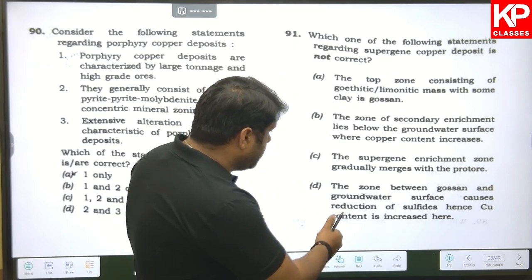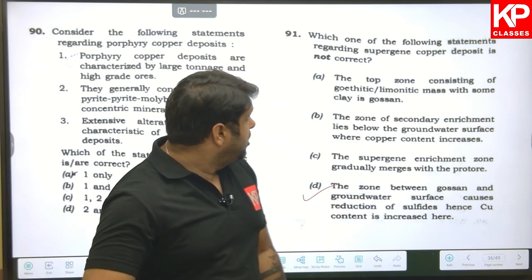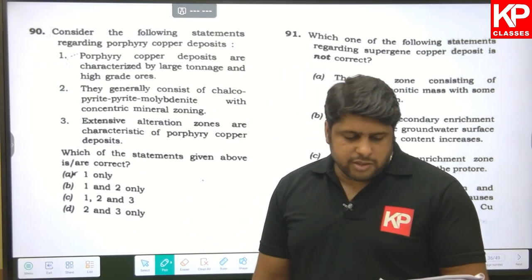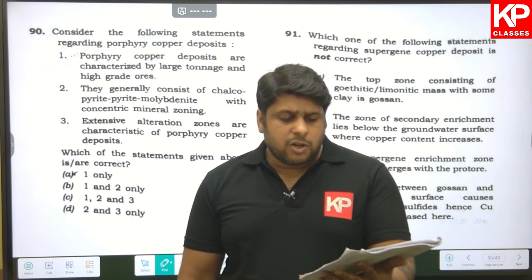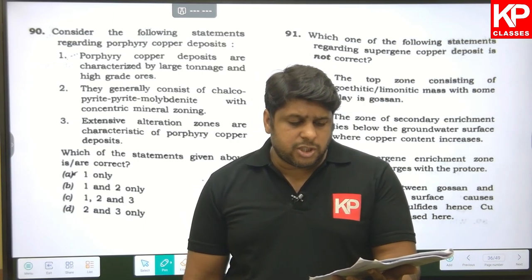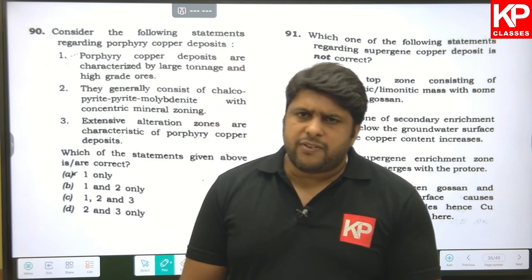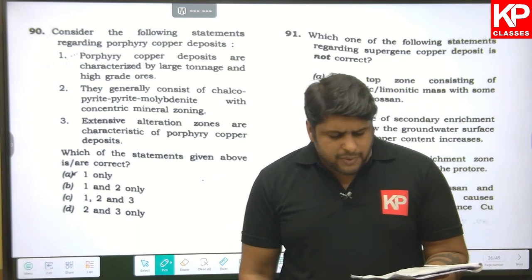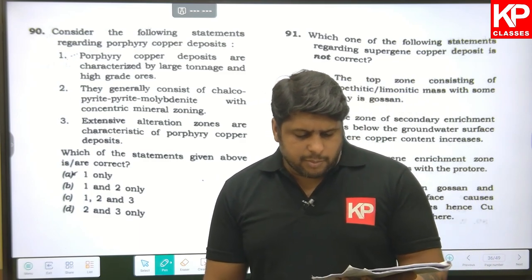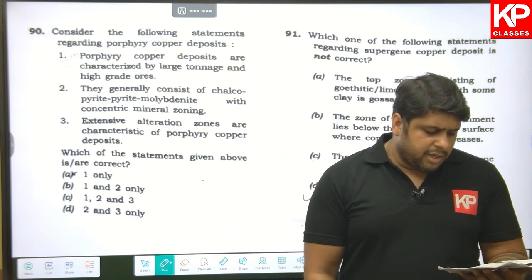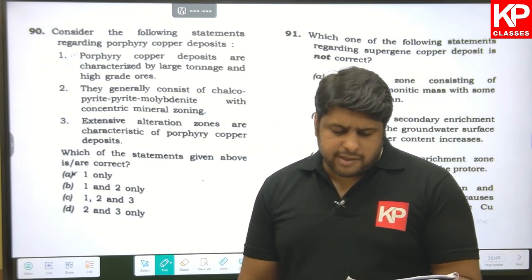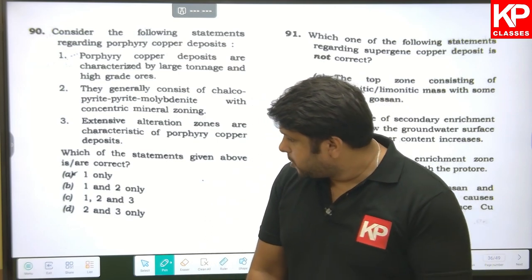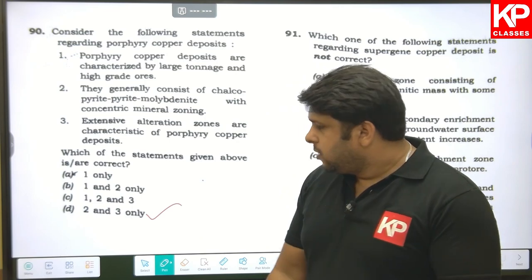Question ninety-two: regarding porphyry copper deposits — they are characterized by large tonnage and high-grade ores. This is false because porphyry copper deposits have grades around only 1%, which is not high grade. They generally consist of chalcopyrite, pyrite, and molybdenite with concentric mineral zoning (correct). Extensive alteration zones are characteristic of porphyry copper deposits (correct). So statements two and three are right — option D is correct.